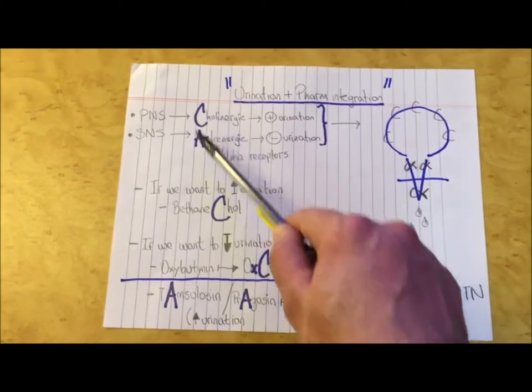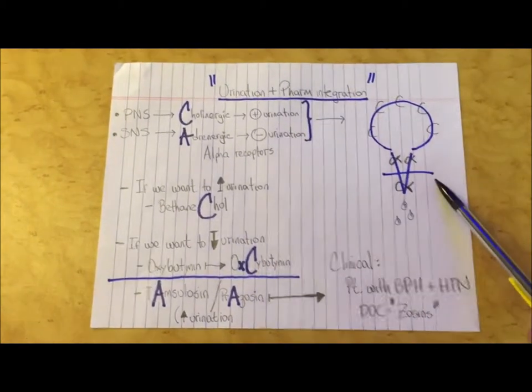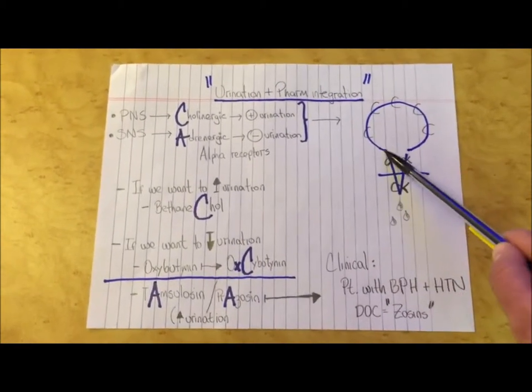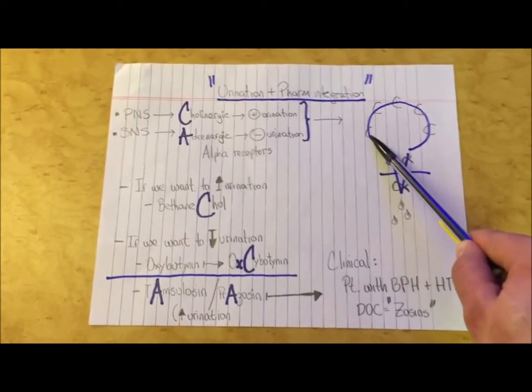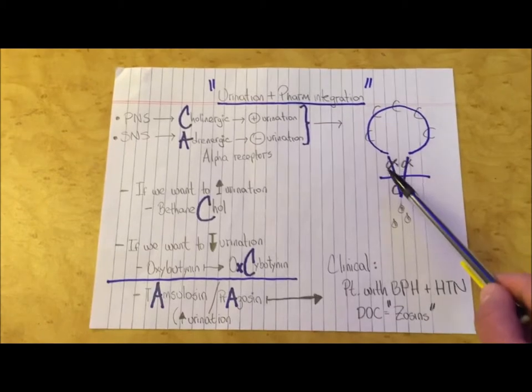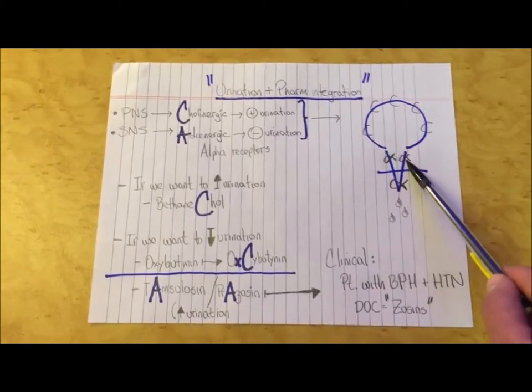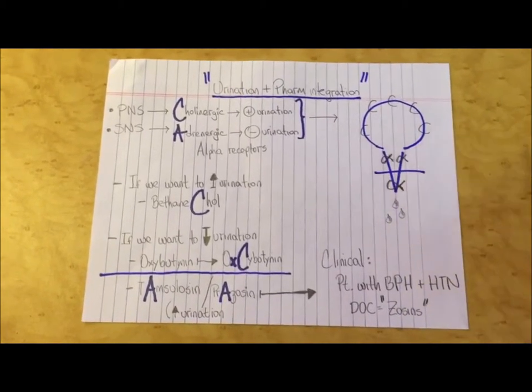I'm going to take the C and the A and draw a urinary system. Here we can see our bladder, which has cholinergic receptors in the detrusor muscle. And here we can see our urinary sphincter, which is controlled by alpha receptors.